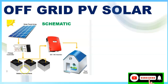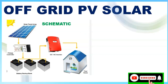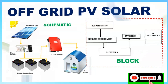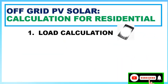First we have the solar panel array, then the charge controller, then the backup battery or battery bank, and then the inverter which converts DC electricity to AC electricity, and then that goes to the home. Here is the block diagram to visualize: solar panels → charge controller → batteries.